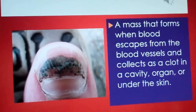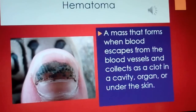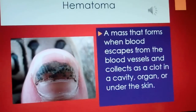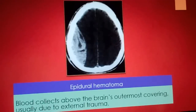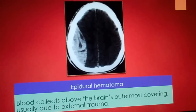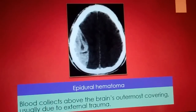Hematoma: a mass that forms when blood escapes from the blood vessels and collects as a clot in a cavity, organ, or under the skin. Epidural Hematoma: blood collects above the brain's outermost covering, usually due to external trauma.